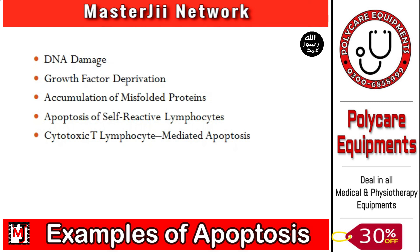In summary, we have studied five examples of apoptosis: 1) DNA damage, 2) growth factor deprivation, 3) accumulation of misfolded/dysfunctional proteins, 4) apoptosis of self-reactive lymphocytes, and 5) cytotoxic T lymphocyte-mediated apoptosis.